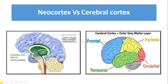Neocortex is a part of cerebral cortex which is concerned with sight and hearing in mammals, and is thus regarded as the most recently evolved part of the cortex. Whereas cerebral cortex is the outer layer of the cerebrum which is composed of folded grey matter, playing an important role in consciousness.